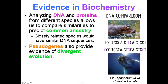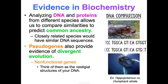Pseudogenes also provide evidence of divergent evolution. Pseudogenes are non-functional genes — essentially vestigial structures of your DNA. They don't code for any proteins or traits, but you just have them. Potentially they're left over from an ancestor you diverged from.